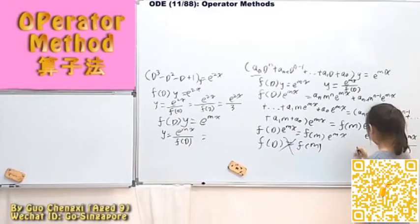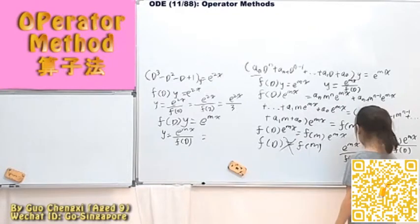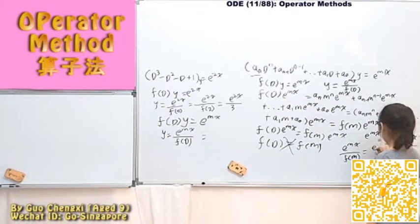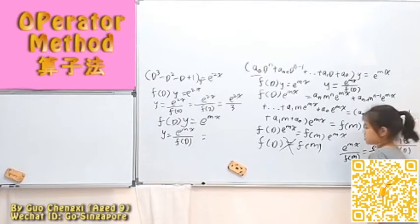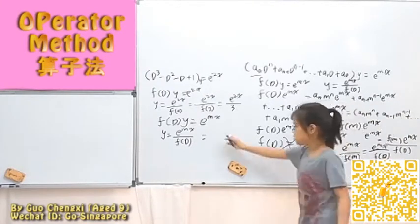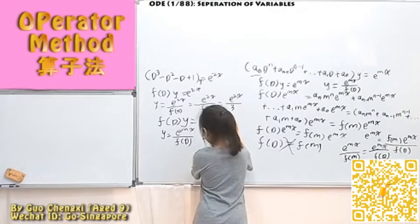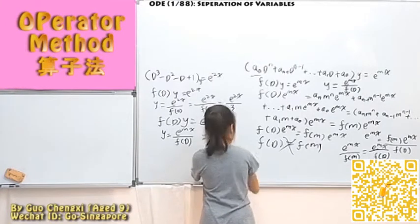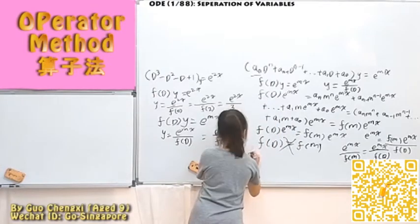So here I can move this part. So basically, what's this? It is equal to e to the power of Mx times 1 over F(M). So what's the conclusion?